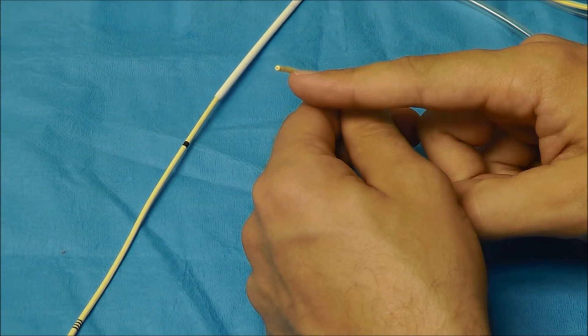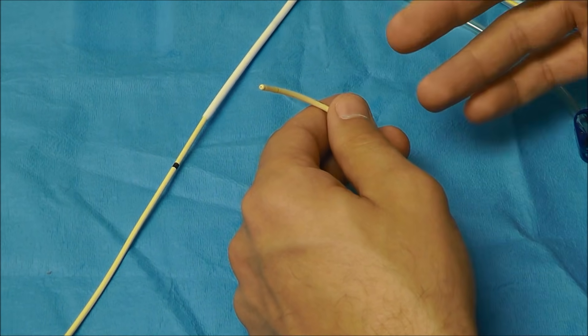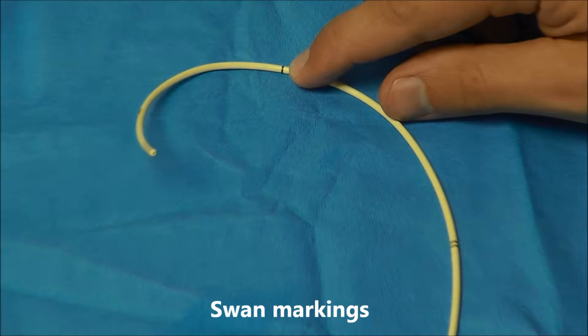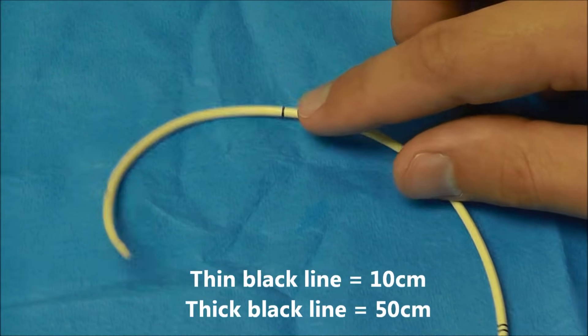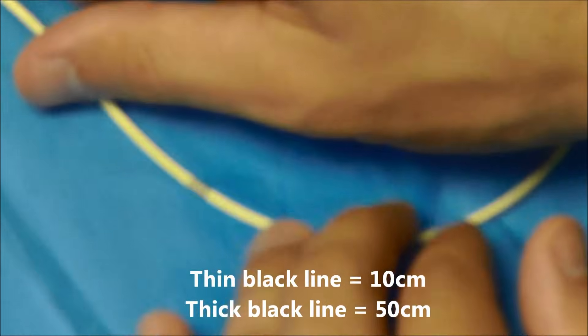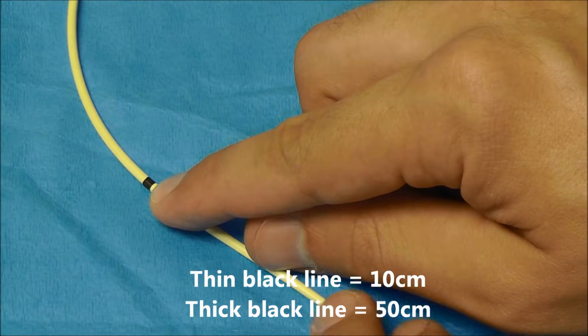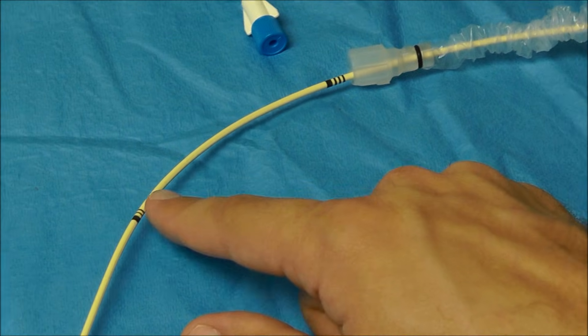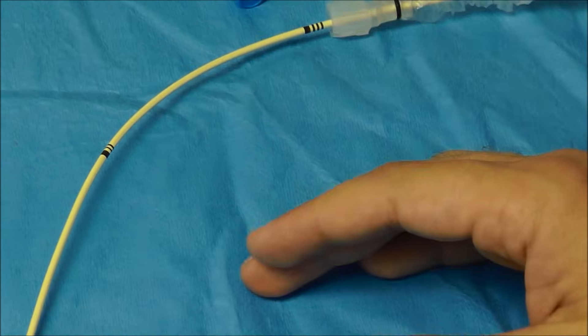And so you're going to need to deflate the balloon and pull back and try again. One thin black line there means 10 centimeters. So there's 10 centimeters, 20, 30, 40, and then a thick black line there means 50 centimeters. And it goes all the way actually up to 100 centimeters.